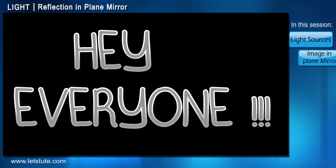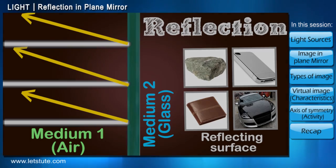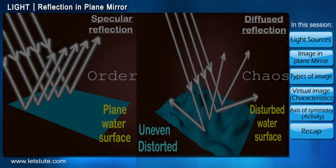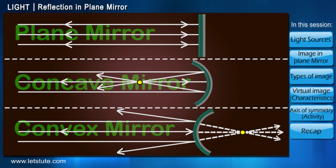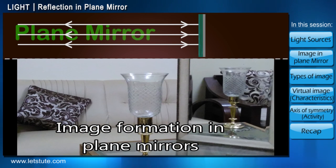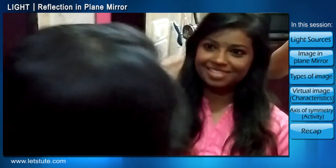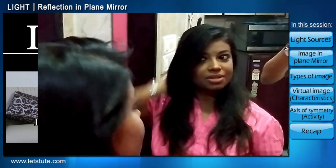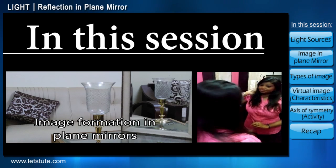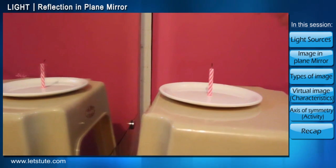Hey everyone, here we are again with another session on reflection. In the last one, we dealt with the concept of reflection, its types, and mirrors — the objects in which reflection is best seen. In this session, we'll see in detail how reflection takes place in plain mirrors. Let's take a mirror which we use at home and place any random household object in front of it.